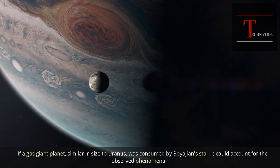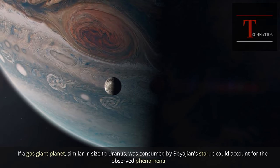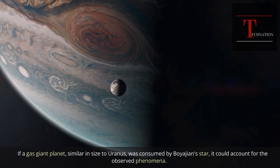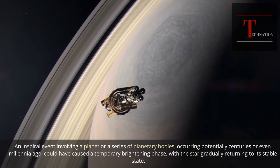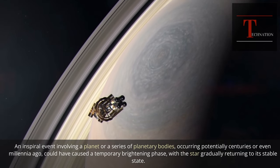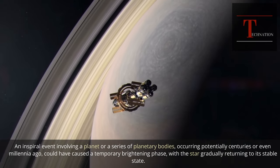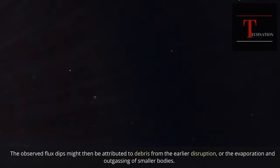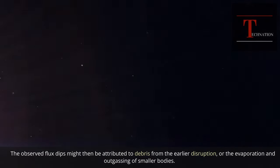If a gas giant planet, similar in size to Uranus, was consumed by Boyajian star, it could account for the observed phenomena. An in-spiral event involving a planet or a series of planetary bodies, occurring potentially centuries or even millennia ago, could have caused a temporary brightening phase, with the star gradually returning to its stable state. The observed flux dips might then be attributed to debris from the earlier disruption, or the evaporation and outgassing of smaller bodies.